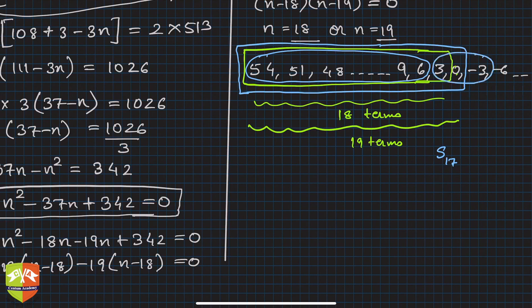And 20 terms also - if in 17 terms you include these three terms as well (3, 0, and -3), that means add three more terms, that is S_20. They are all the same because S_17 is still 54, 51, dot dot dot, till 6.